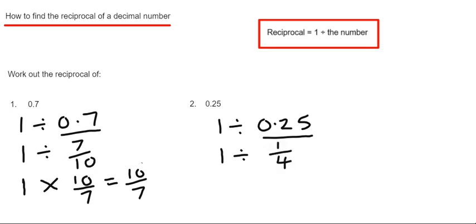Again we just need to use the rule keep flip change. We keep the first fraction the same, change the divide to a times, and flip the second fraction. If we times a number by 1 that means it will stay the same. So we get 4 over 1. And 4 over 1 is exactly the same as 4.